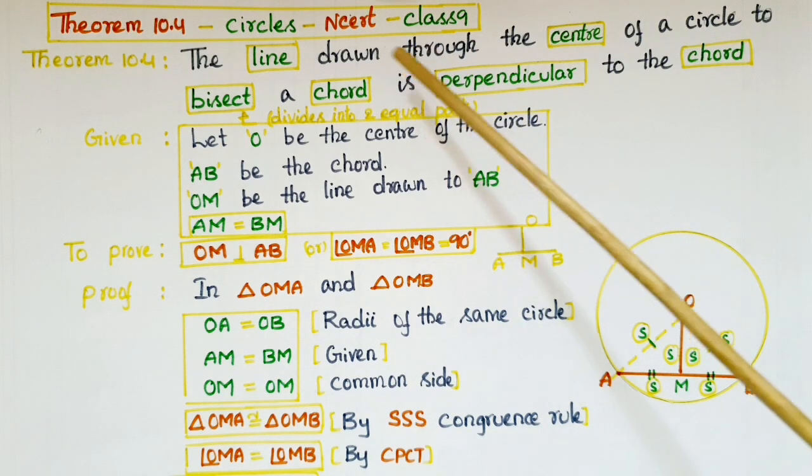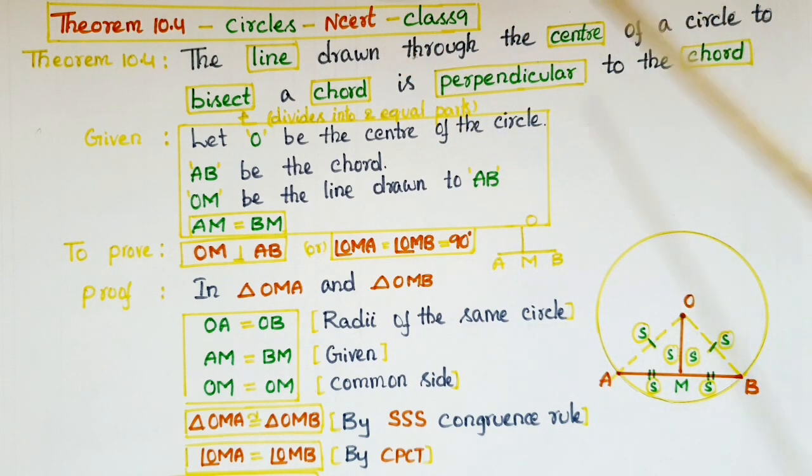In this theorem, the line drawn through the center of a circle to bisect a chord is perpendicular to the chord.